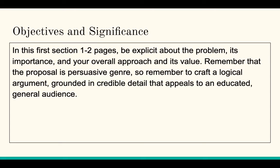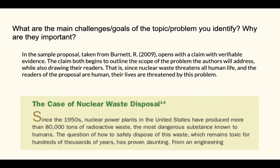The objects and significance section should be one to two pages. You're going to be explicit about your problem, its importance, and your overall approach and value. Remember that the proposal is a persuasive genre, and in addition to anticipating your audience via word choice and tone, you'll want to craft a logical argument grounded in credible detail in order to make your appeal.